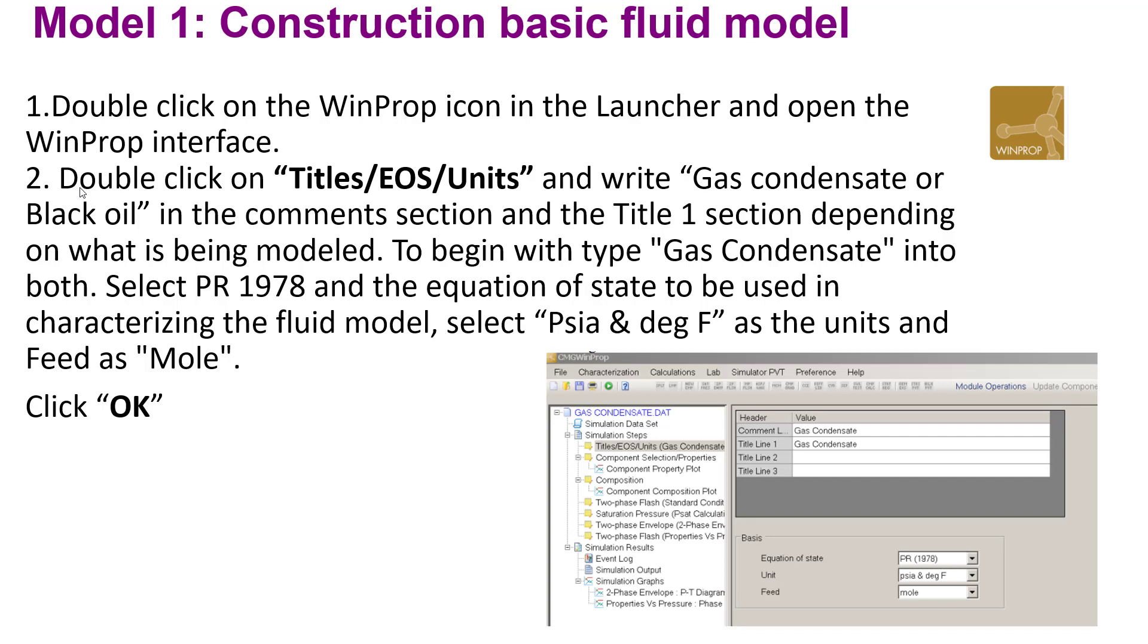Step number two: double-click on Title EOS Unit and write 'gas condensate' or 'light oil' in the comment section and the title number one section, depending on what is being modeled. For gas condensate, you can select PR1978 as the equation of state to be used in the PVT analysis model. Then select the following units, save the model, and click OK. This is the interface you will see in the software.